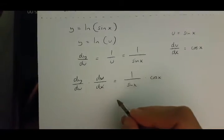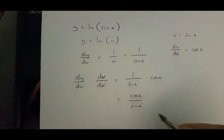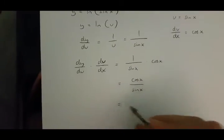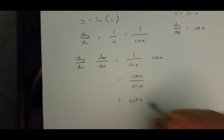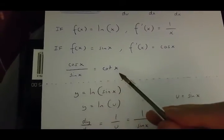And this is, in fact, cos x over sin x, which is equal to cot x, because of this rule over here.